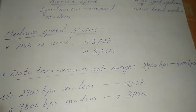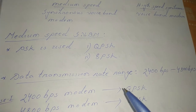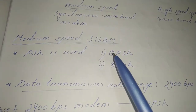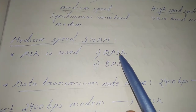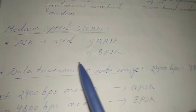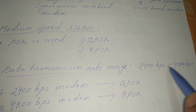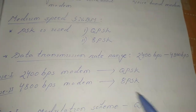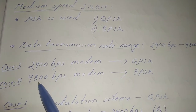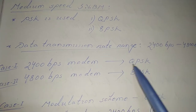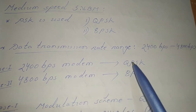In synchronous voice band modem we use Phase Shift Keying as the digital modulation technique. In the case of medium speed synchronous voice band modem, we use QPSK (Quadrature Phase Shift Keying) as well as 8PSK technique. The data transmission rate range is 2400 bits per second to 4800 bits per second. The first case is the modem transmitting at 2400 bps using QPSK, and the second case is the modem transmitting at 4800 bps using 8PSK.